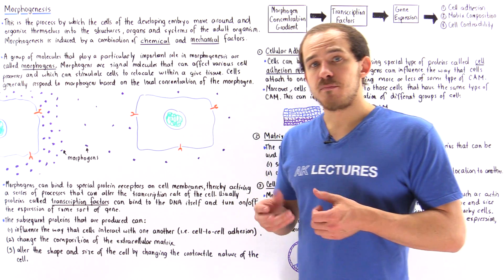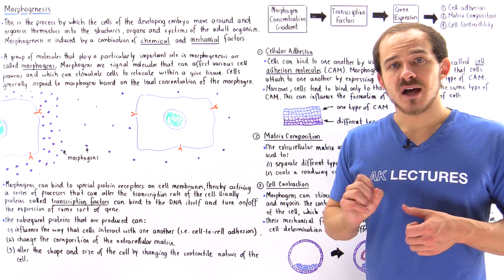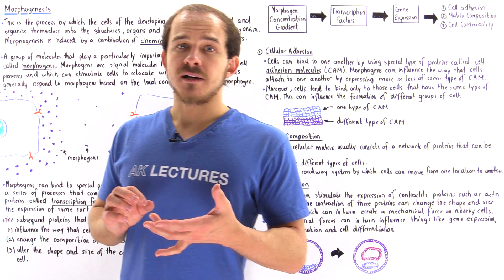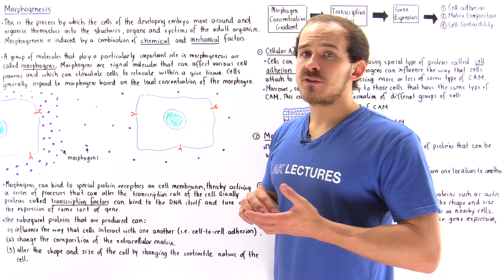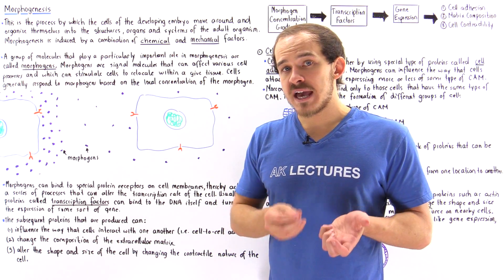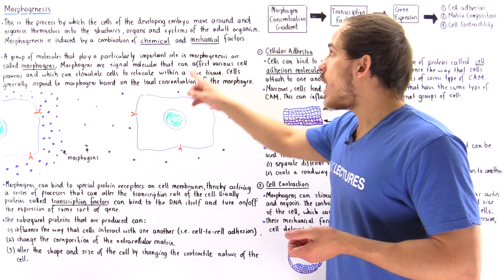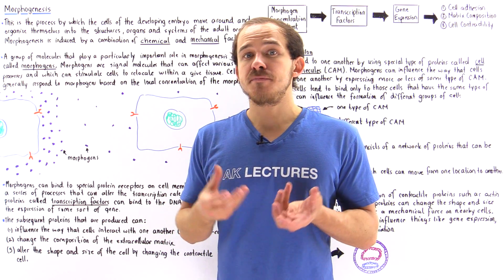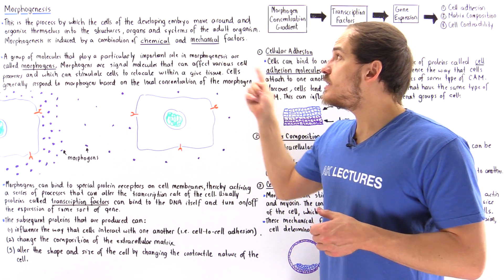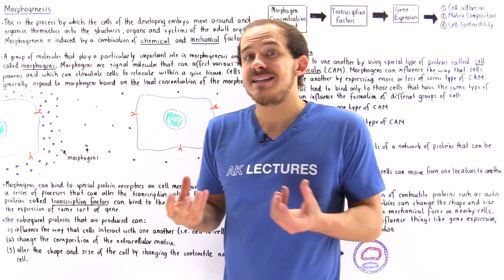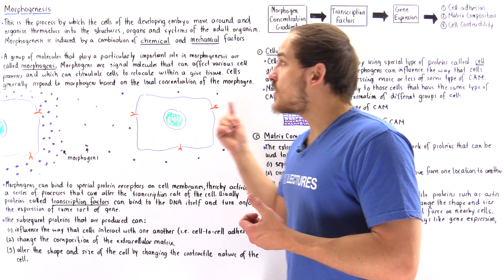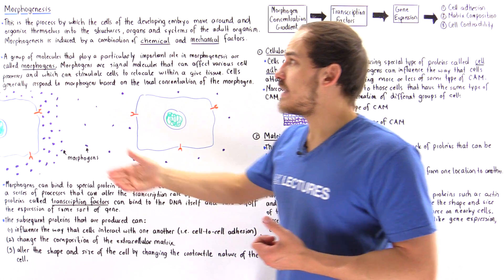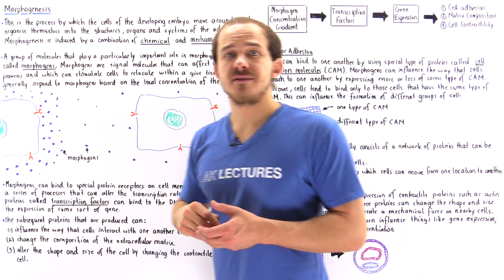Morphogenesis is stimulated by two different types of factors: chemical factors and mechanical factors. A chemical factor is simply a special type of chemical, while a mechanical factor is simply a physical force that exists between our cells. These two factors play together — there is an interplay between them that stimulates the process of morphogenesis.